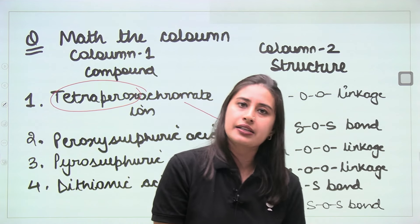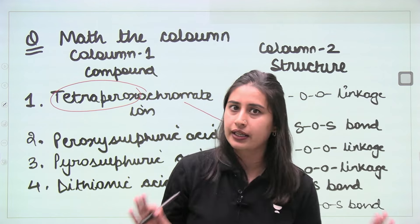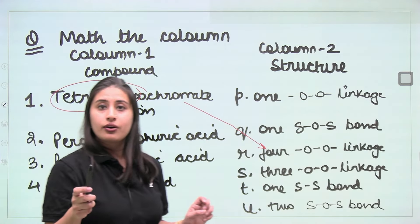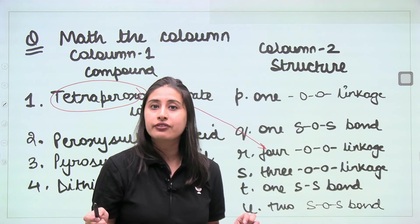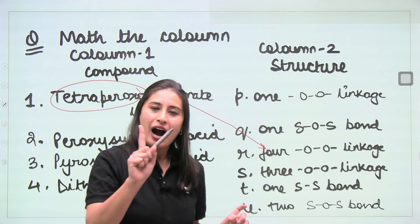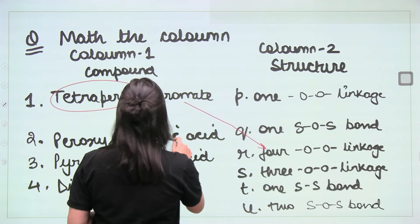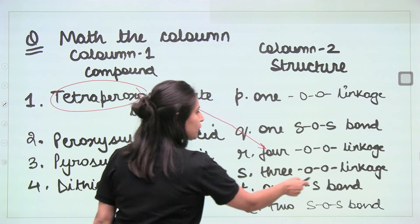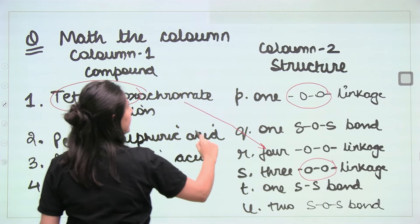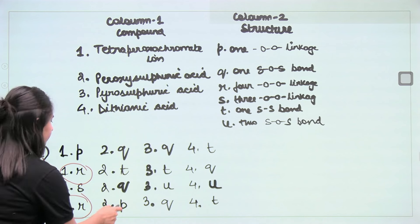We've learnt about peroxysulfuric acid (also called peroxymonosulfuric acid), H2SO5 — it has one peroxy linkage (O-O bond). So compound 2 has 1 peroxy linkage, matching option P. We already know the right answer to this question.